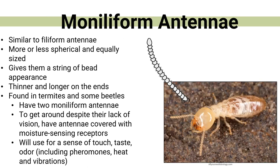Now you have something called a moniliform antenna. These look like a string of beads — a great example is termites. They're very similar to the filiform antenna, but a little bit more spherical, not as pointy, more globe-shaped, and thinner and longer on the ends. Termites and some types of beetles have these. This is how they get around — their moisture-sensing reception — and they also use them for touch, taste, and finding pheromones. Termites also use these to feel vibration, so it's not just for smelling. They use them as a form of hearing and can even detect heat and cold with them.